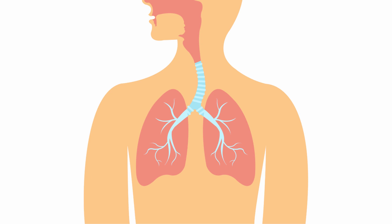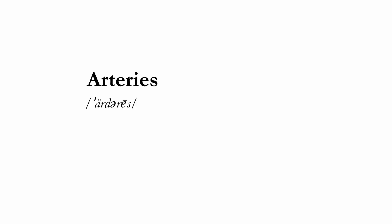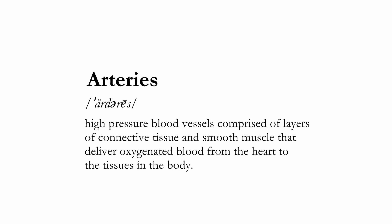For a quick refresher, our arteries are high-pressure blood vessels comprised of layers of connective tissue and smooth muscle that deliver oxygen-rich blood from the heart to the tissues in the body. No actual gas exchange occurs between arterial blood and the surrounding tissue because the artery walls are too thick. Blood flow is regulated here through constriction, which is blood vessels getting narrower, or relaxation, which is blood vessels getting wider.